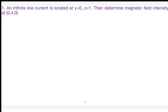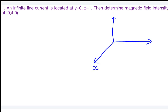The first question states: an infinite line current is located at y=0 and z=1. Find the magnetic field intensity at (0,4,0). First, represent the line current in a diagram with x, y, and z axes. When y is fixed at 0 and z is fixed at 1, the varying component is x, so the line current is parallel to the x-axis.